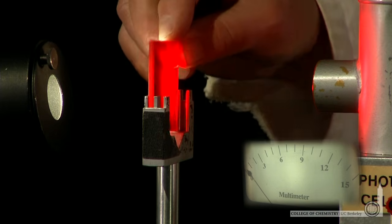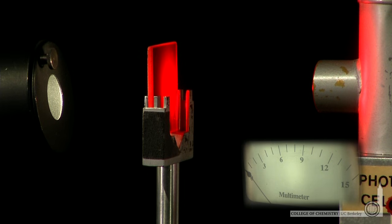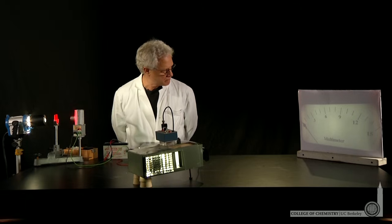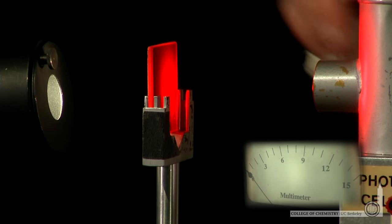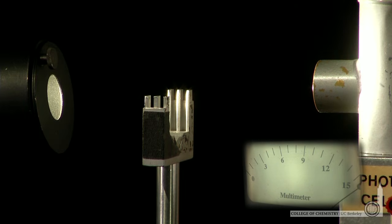If he puts a red filter in the path, now only red photons can strike the metal and you can see they do not have sufficient energy to eject photoelectrons.